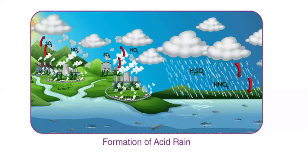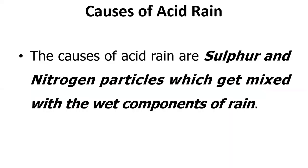Similarly, nitrogen dioxide reacts with oxygen and water to produce nitric acid. This is the formation of acid rain. The components of acid rain are sulfur and nitrogen particles that mix with water components of the rain.